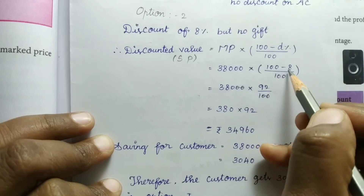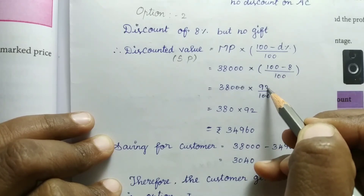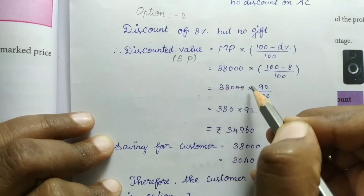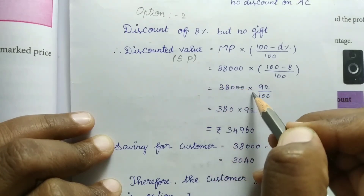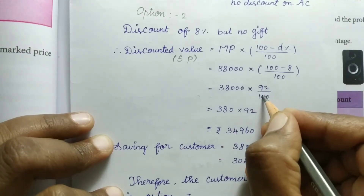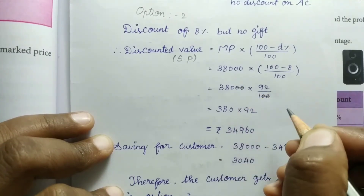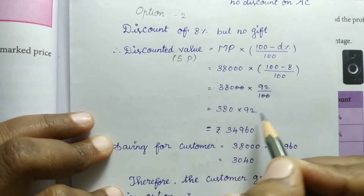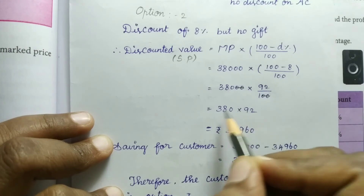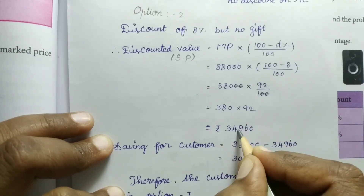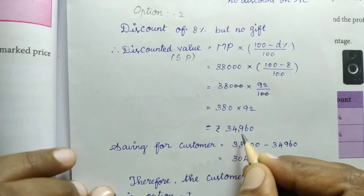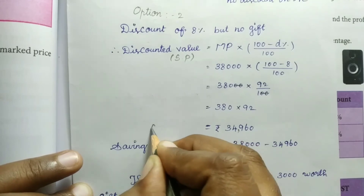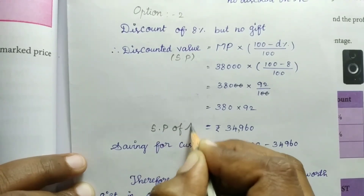So 100 minus 8 gives 92, divided by 100. The value is 38,000 × 92 ÷ 100. Simplifying, 380 × 92 equals 34,960. So the selling price of the AC under option 2 is Rs. 34,960.